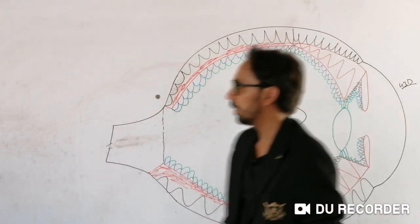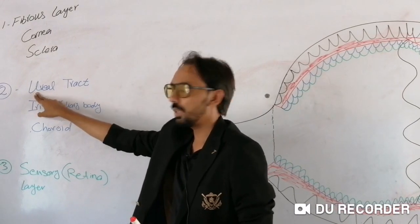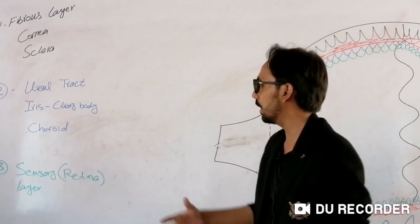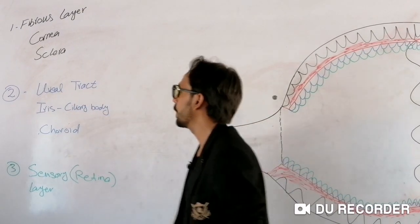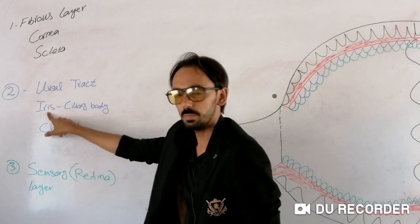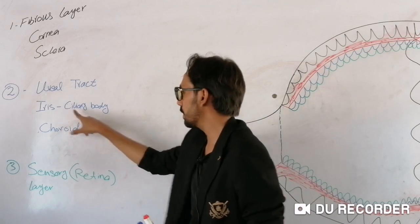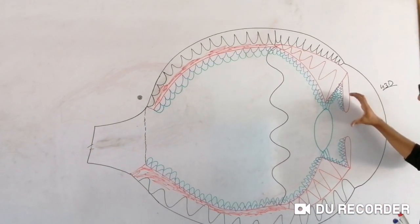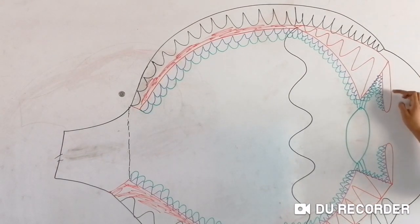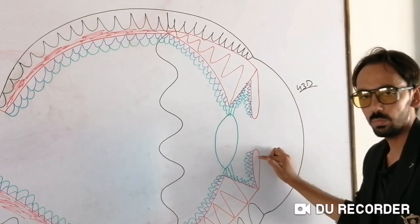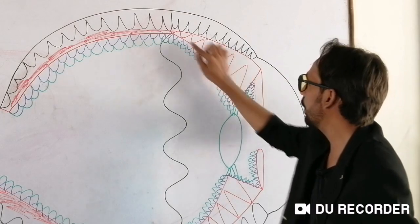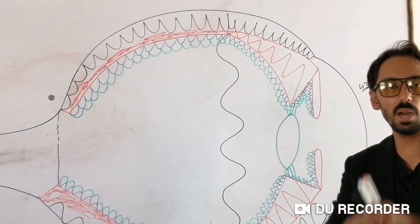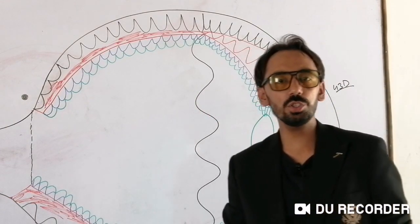Moving further, the second layer of the eyeball is called the uveal tract, or the nutritive/vascular layer. Almost all the vascularity of the eyeball is in the uveal tract. It contains different structures: from anterior to posterior, these are the iris, the ciliary body, and the choroid. The choroid is helpful for the nutrition of the retinal pigmented epithelium.